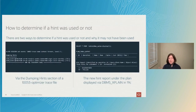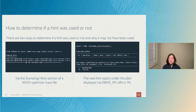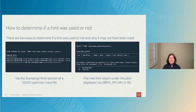Now let's address the most important question: why wasn't my hint used? Prior to 19c, your only option was to look in the optimizer trace — the 10053 trace file — and search for the 'Dumping hints' section. Starting from 19c, we have a much easier way: a hint report that appears below the execution plan, giving guidance on whether your hint was used, whether there was a syntax error, or whatever the case may be.